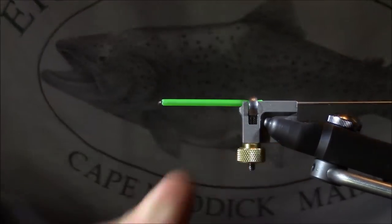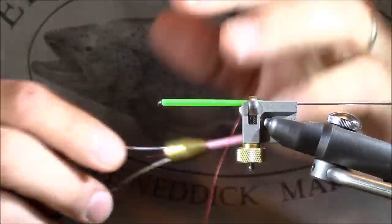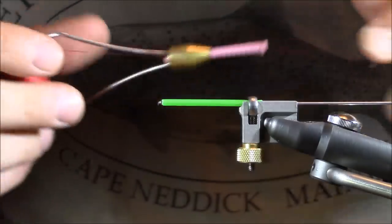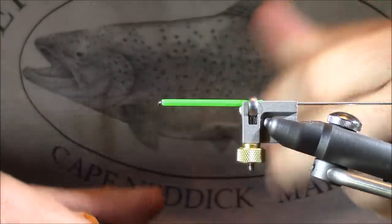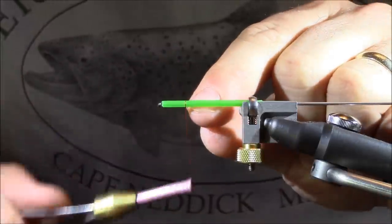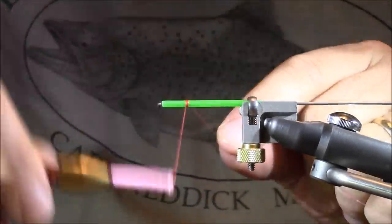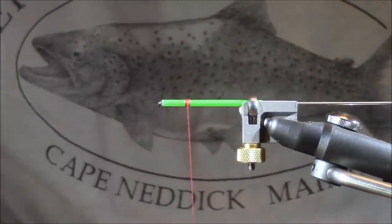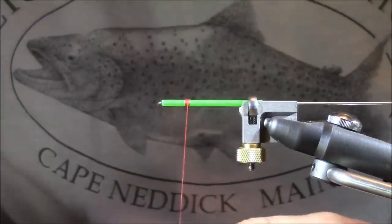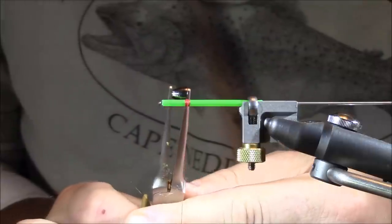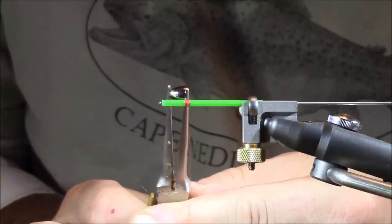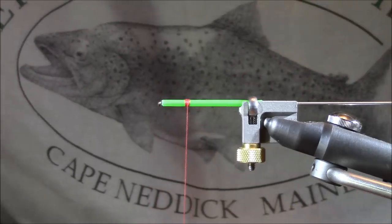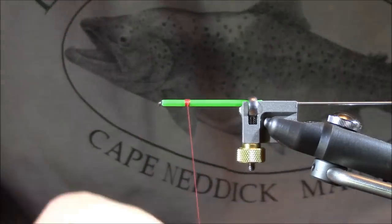Once I'm sure this is secure, I'm going to grab some thread. I'm going to be using some Uni-Thread, six-aught red. I like the red for this pattern, you'll see why in a bit. It's going to relate to the gills. To start this off, I'm going to leave a nice little section up front. I don't have to worry about being really specific in that area, but I do want to leave a large enough portion to attach my cone head. We're going to put the cone head on at the end, but you want to make sure that you have some material left over the end of the cone head so it will burn back over your finished head of the fly.